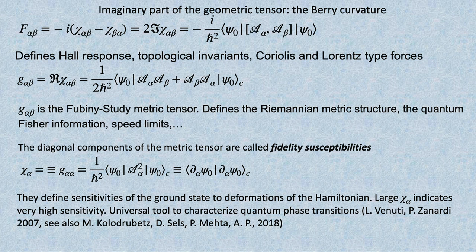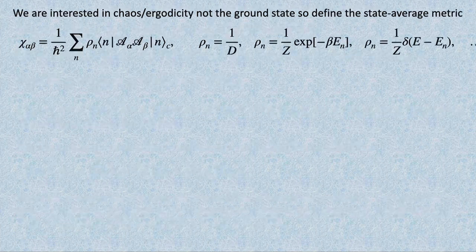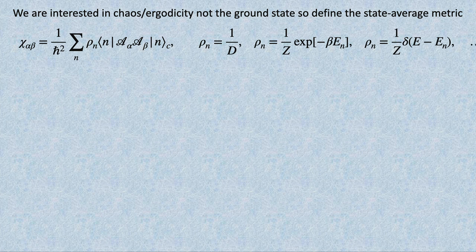There was an interesting line of research with a nice paper by Venuti and Zanardi, already more than 15 years ago, who suggested you can use fidelity susceptibility as an observable-independent way to characterize quantum phase transitions, getting scaling behavior and so on. I was involved in work where we defined geometry of phase transitions. But now we are interested in chaos and ergodicity, and therefore in excited states.